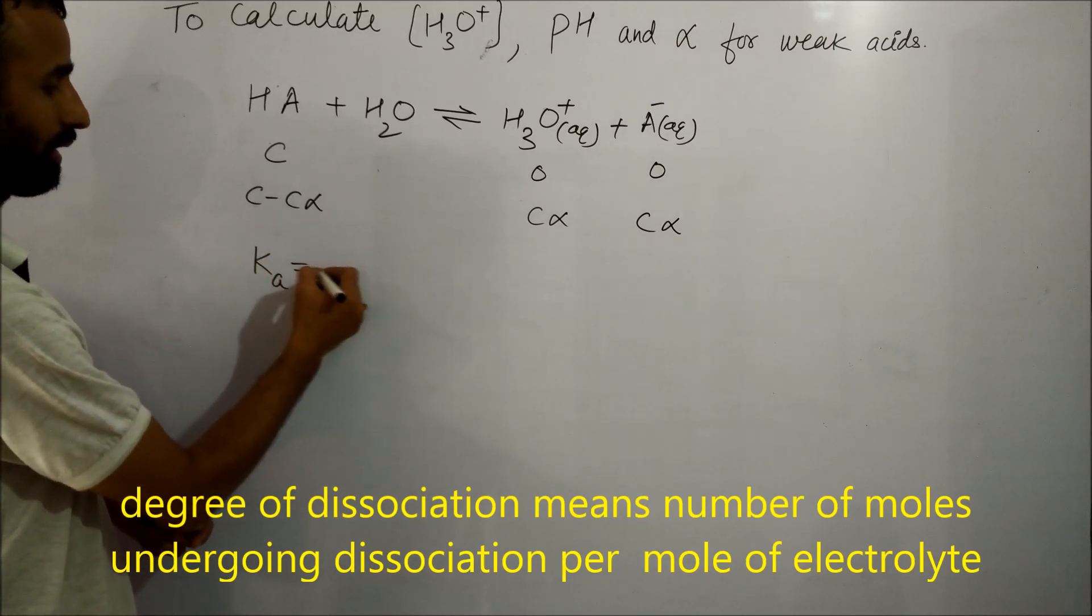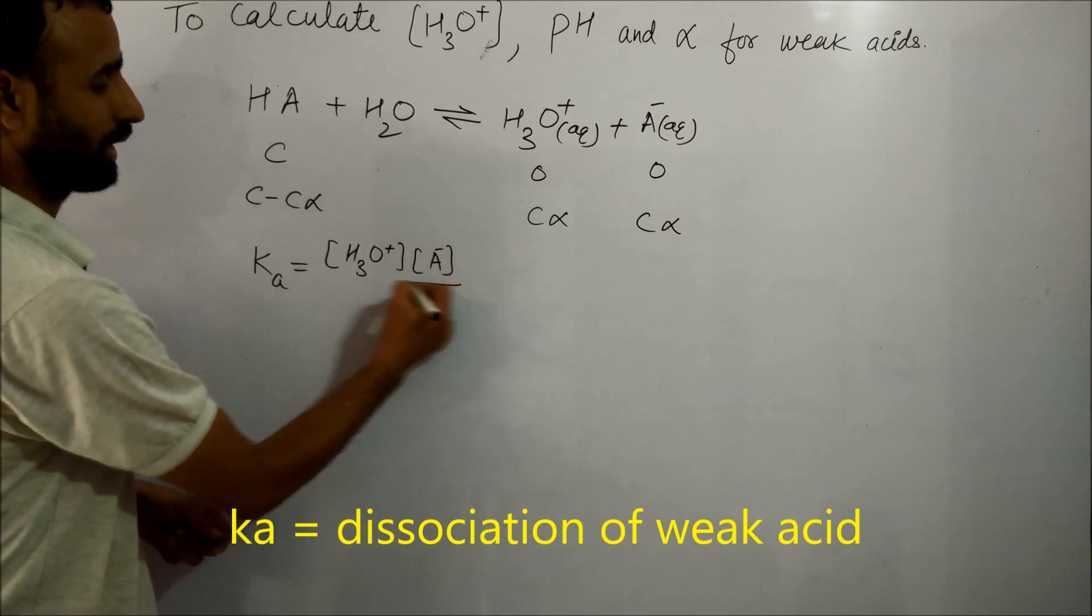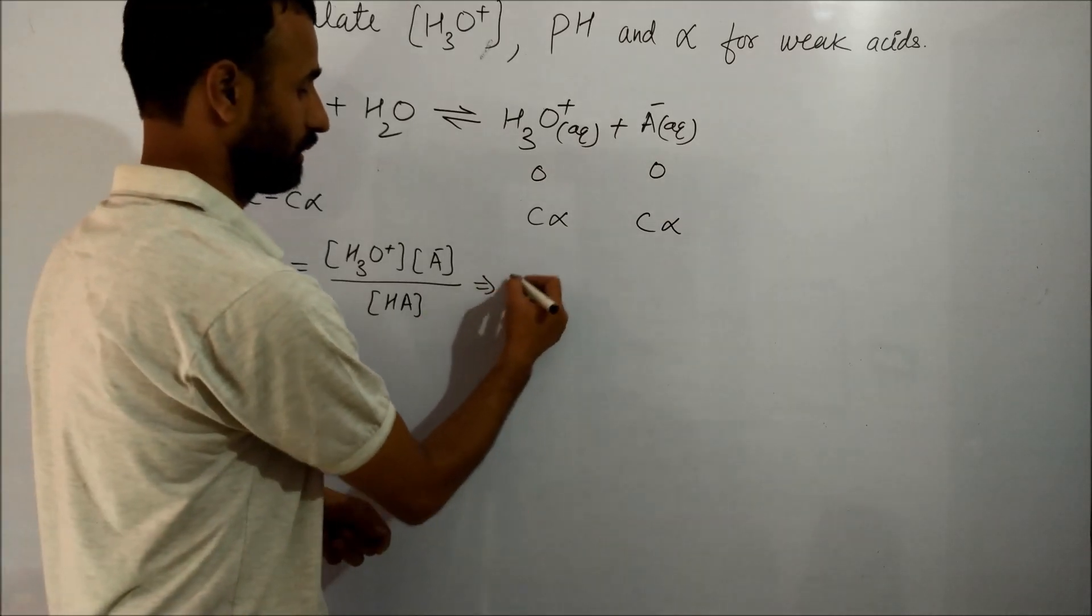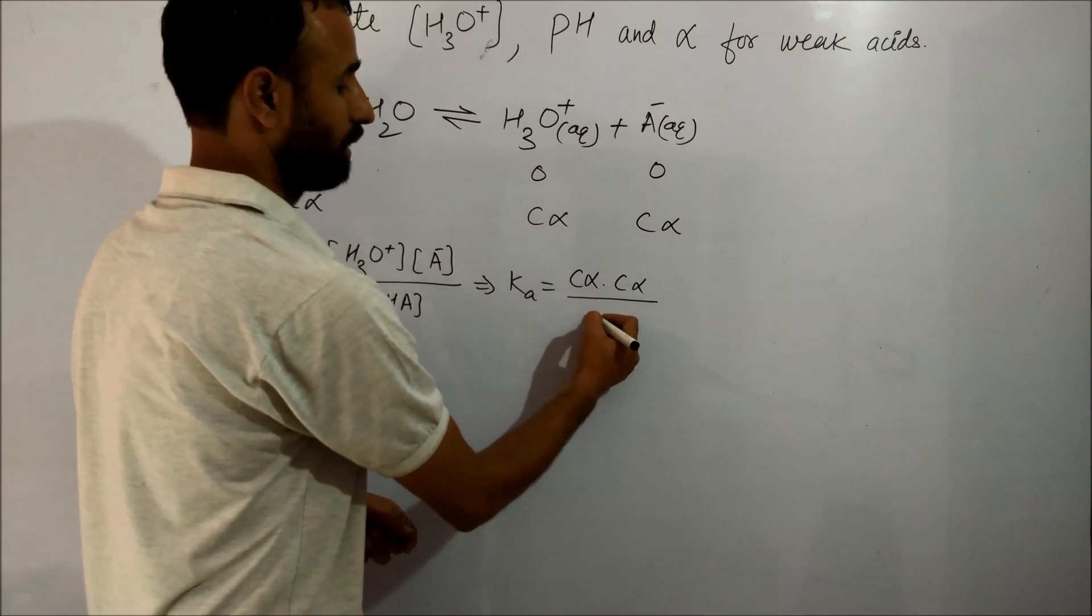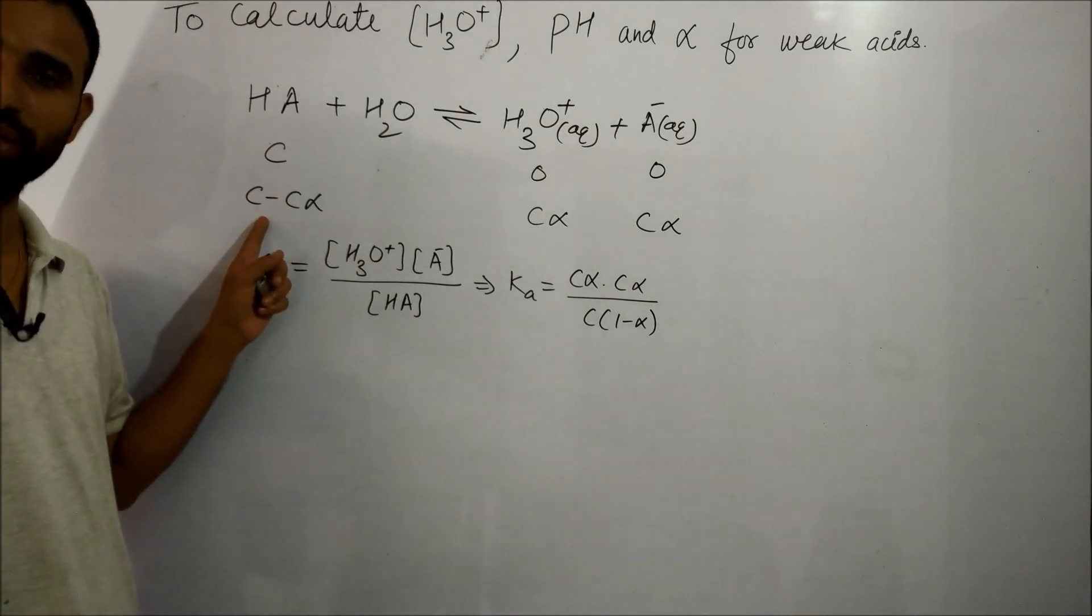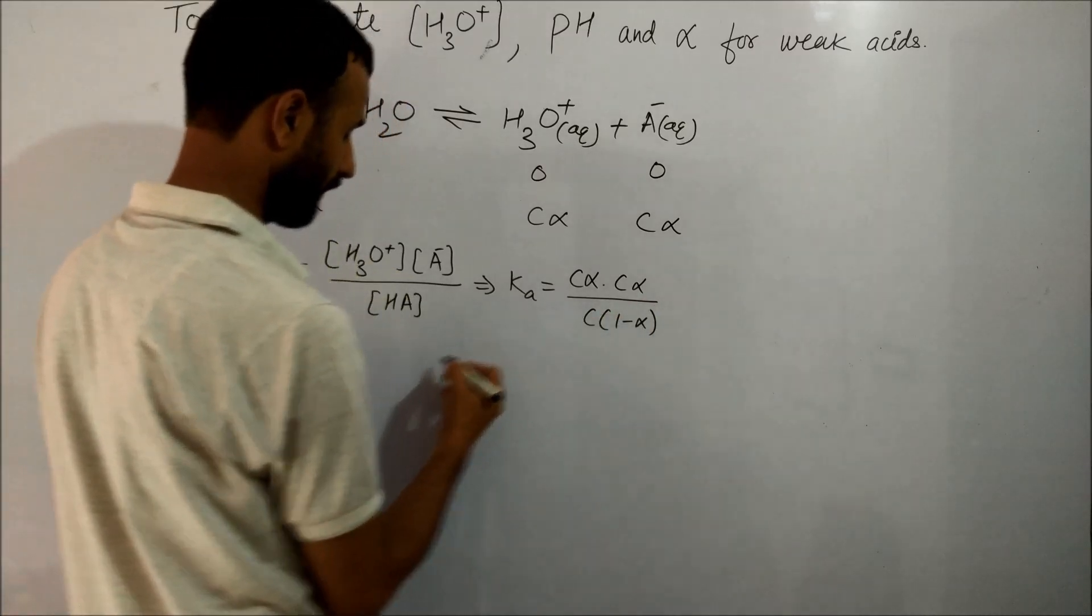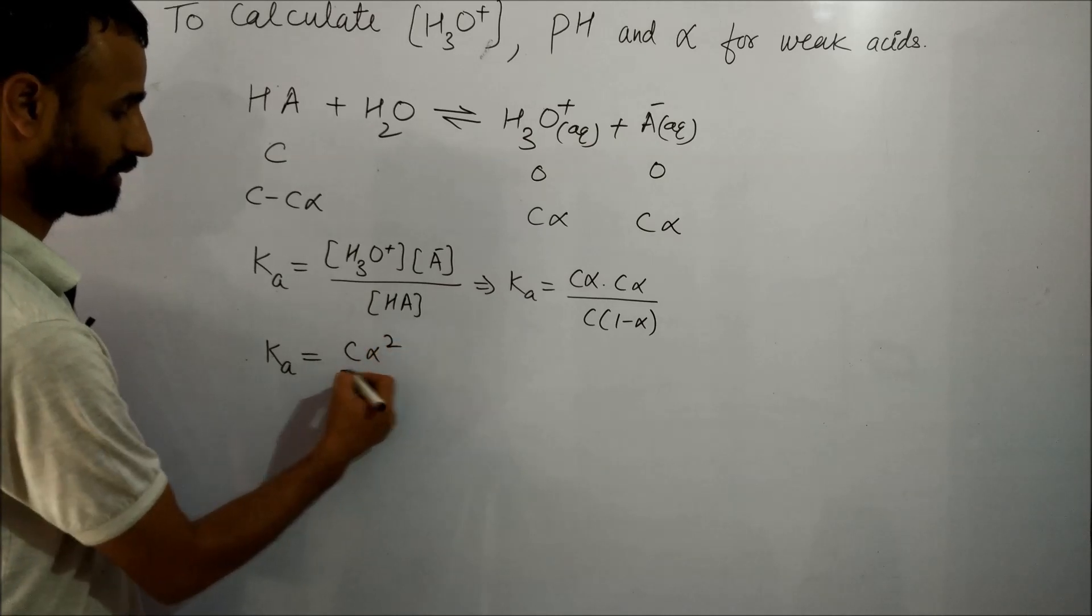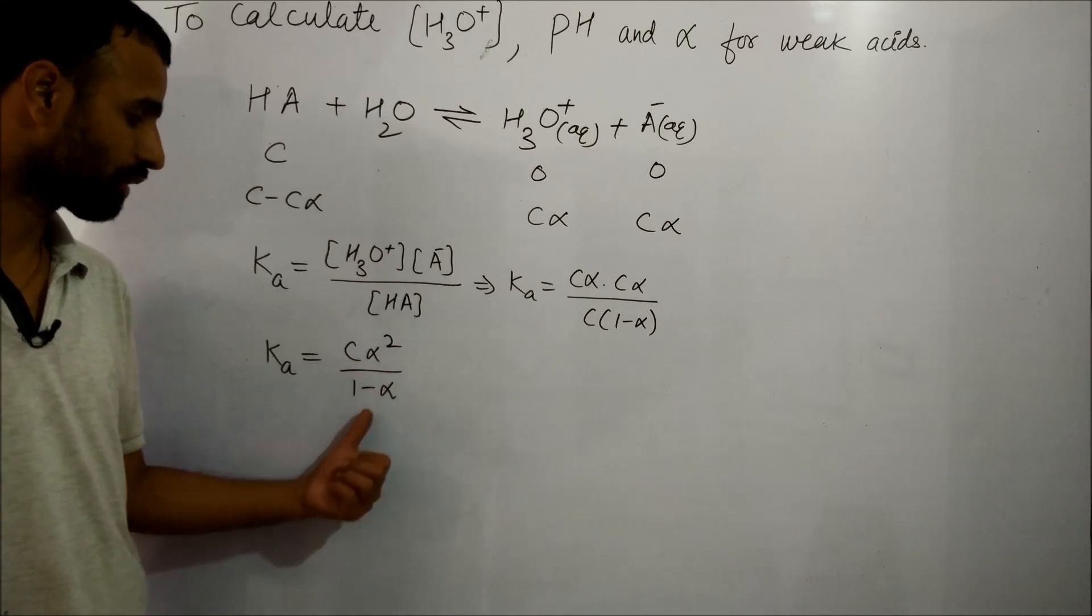So Ka equals [H3O+][A-] over [HA]. That is Ka equal to Cα times Cα divided by C minus Cα. Taking C common, we get C times (1 - α). So Ka equals Cα² over (1 - α).